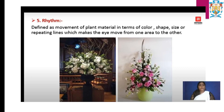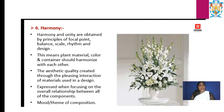Next, harmony. Harmony and unity are obtained by the principles of focal point, balance, scale, rhythm, and design. This means plant material, color, and container should harmonize with each other. The aesthetic quality is created through the pleasing interactions of materials used in a design, expressed through the overall relationship between all the components — the mood or theme of the composition.